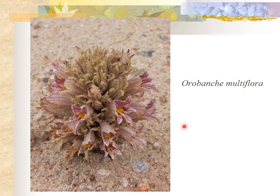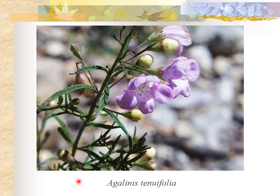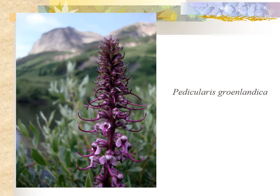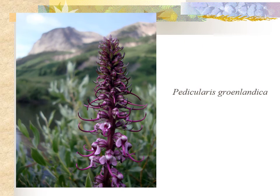Agalinis tenuifolia is a somewhat uncommon plant found in Larimer County. You can tell it is hemiparasitic rather than holoparasitic because it has chlorophyll. Pedicularis groenlandica, commonly known as elephant's head, is quite common in the subalpine and alpine of Colorado. It's a great common name because the flowers have trunk-like appendages that truly look like the head of an elephant — if you take a high-elevation hike next summer, you're bound to encounter it.